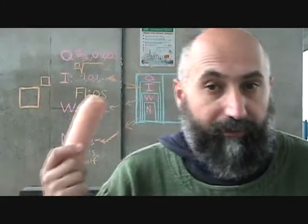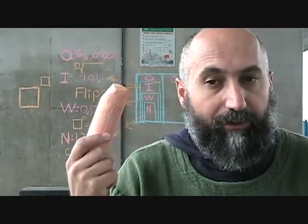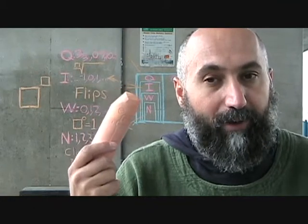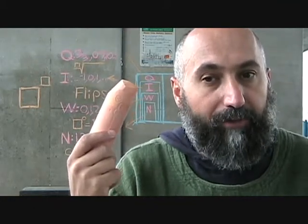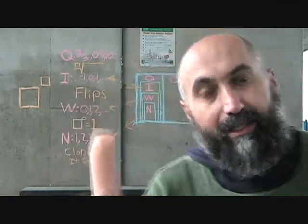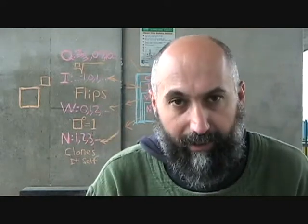For the integers — if you go one level above the whole numbers, you get integers. Integers include negative numbers. They introduce negative whole numbers. So when you have your natural numbers, you go up to the whole numbers, and whole numbers introduce zero.